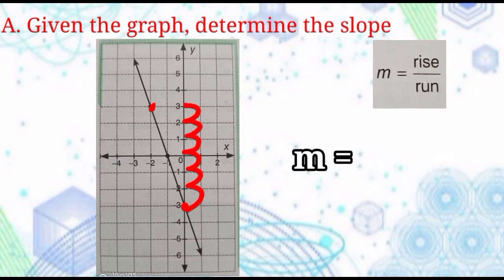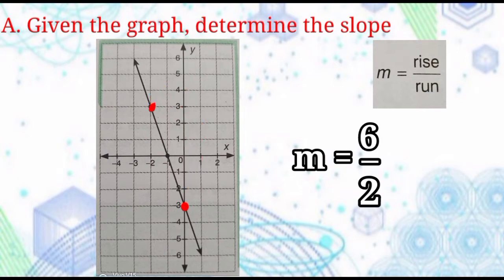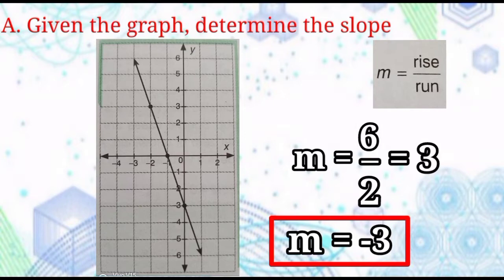The final answer: the slope is equal to positive 1. Example number 2: from the most downward point, it rises 6 units and runs 2 units going to the second point. Simplify: 6 over 2 equals 3. Observe that the graph is falling from left to right — it represents a negative slope. Therefore, the slope is equal to negative 3. This is how to determine the slope of a line given its graph.